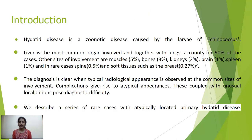Introduction. Hydatid disease is a zoonotic disease caused by the larvae of echinococcus. The liver is the most common organ involved and together with the lungs it accounts for 90% of cases. Other sites of involvement are muscles 5%, bones 3%, kidneys 2%, brain 1%, spleen 1%, and in rare cases spine 0.5% and soft tissue such as the breast 0.27% are also involved.